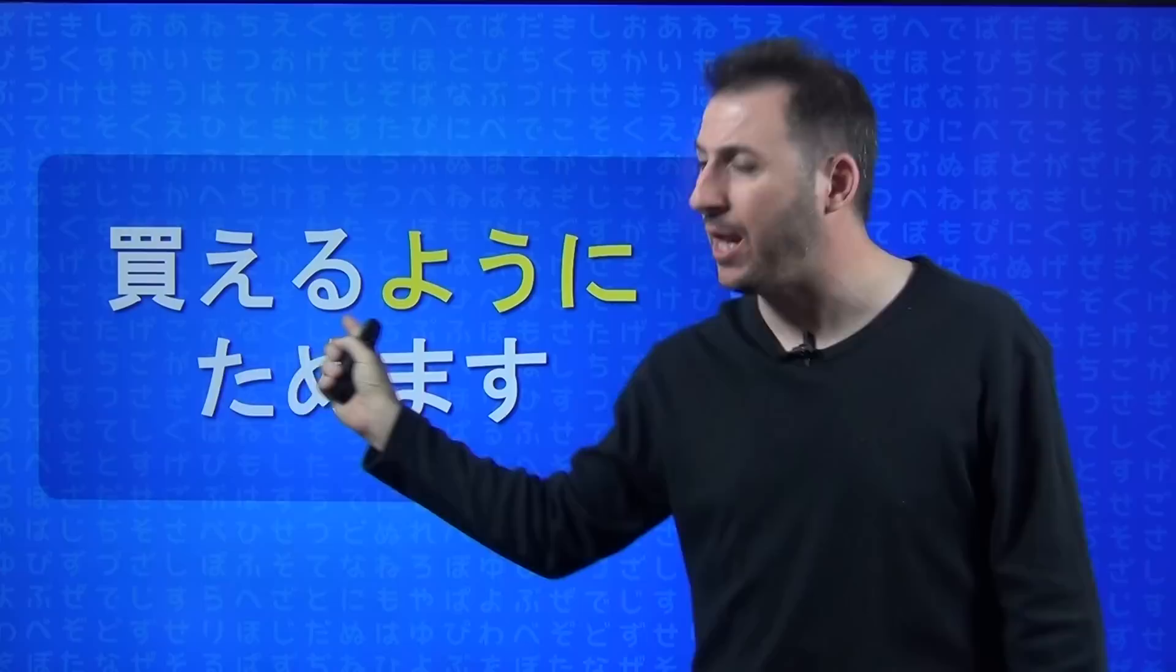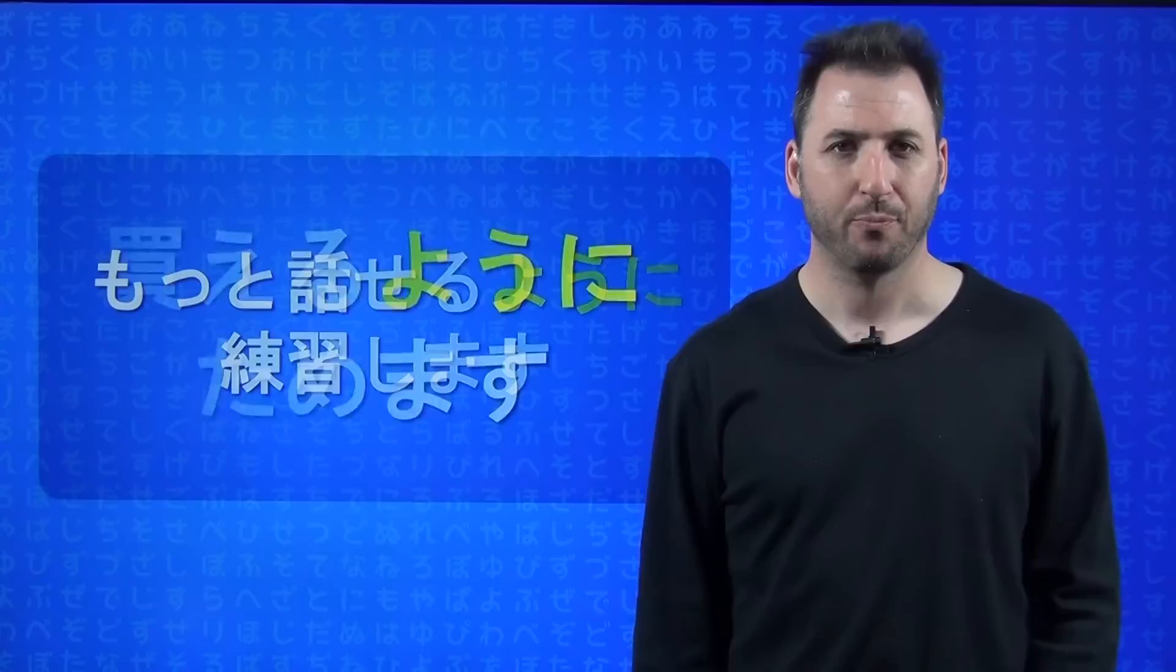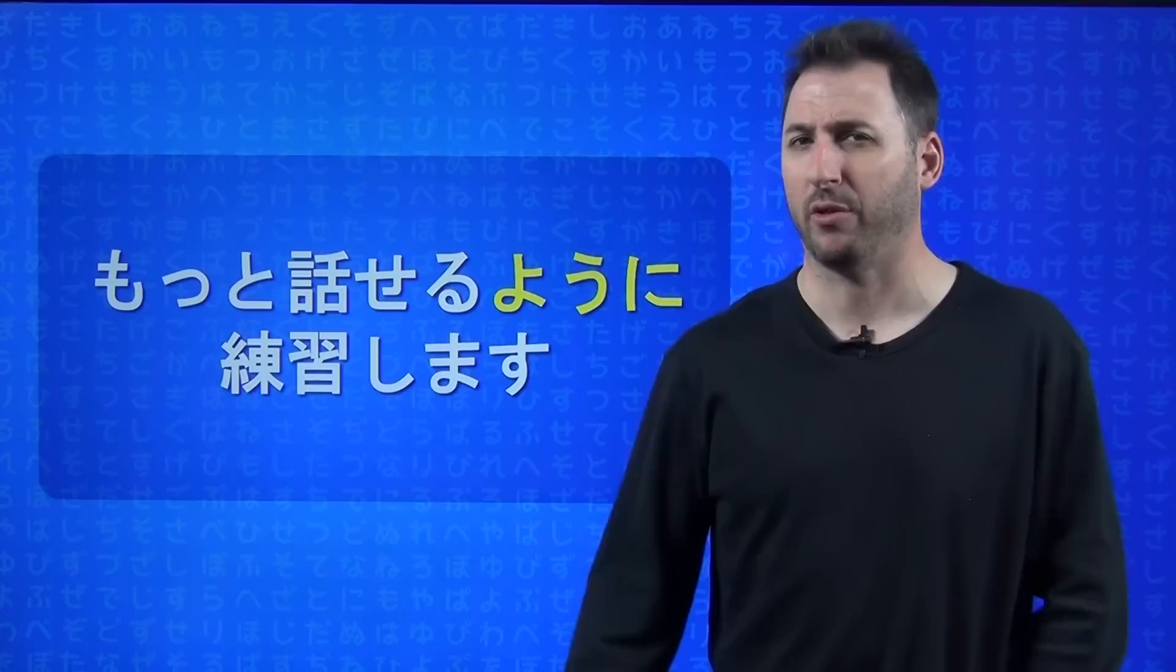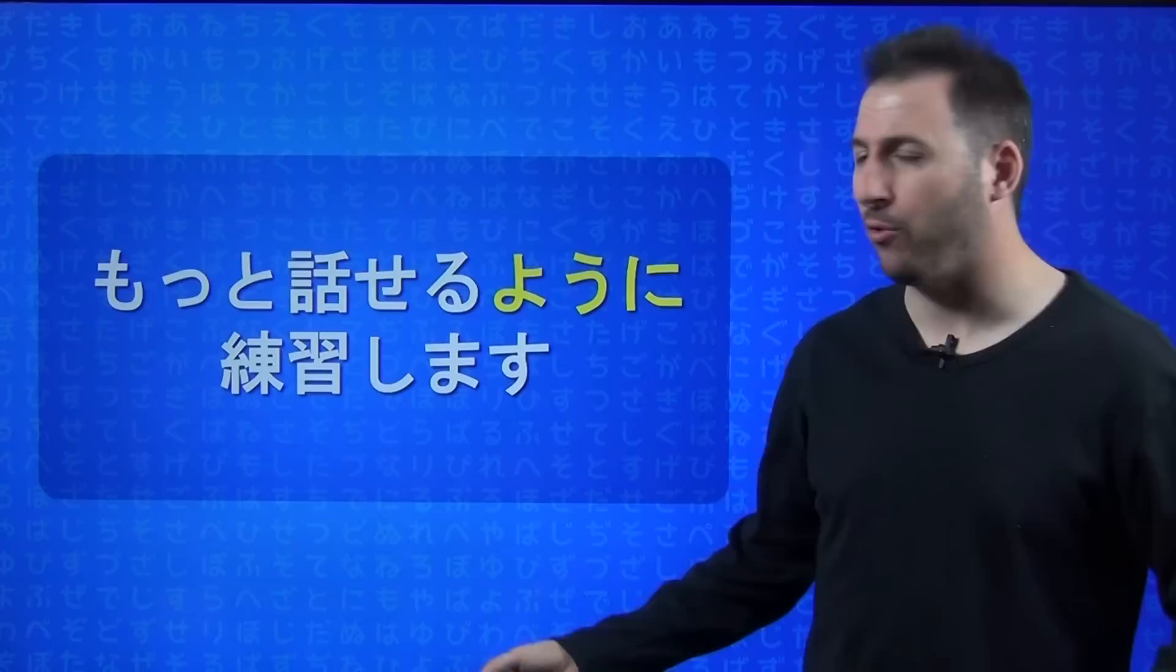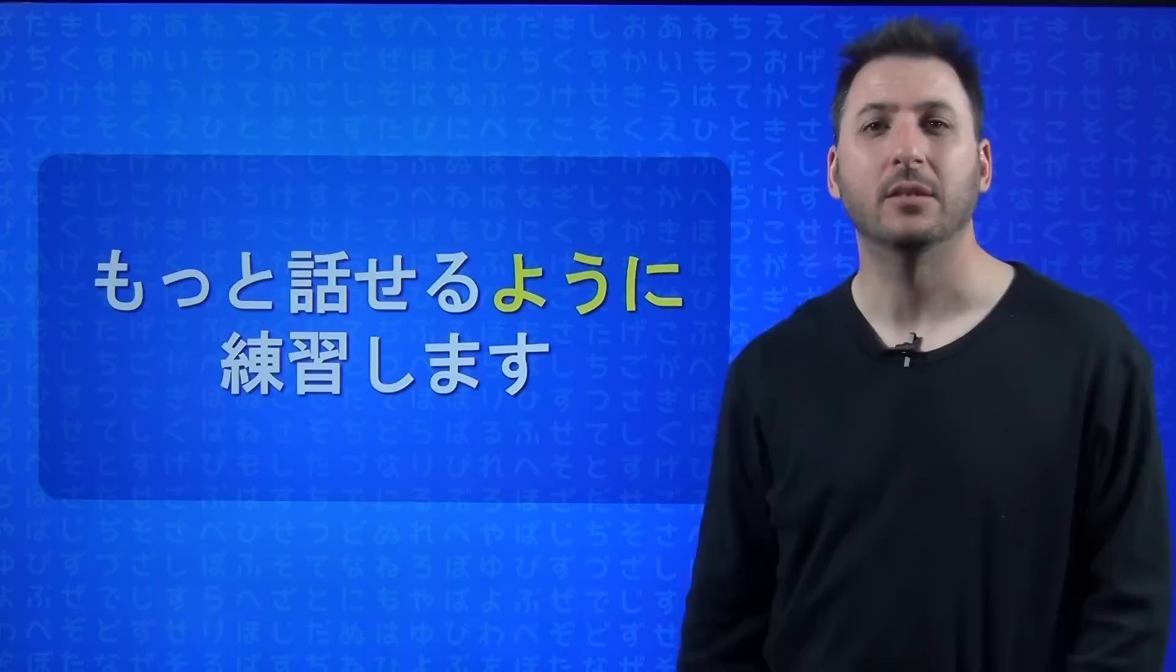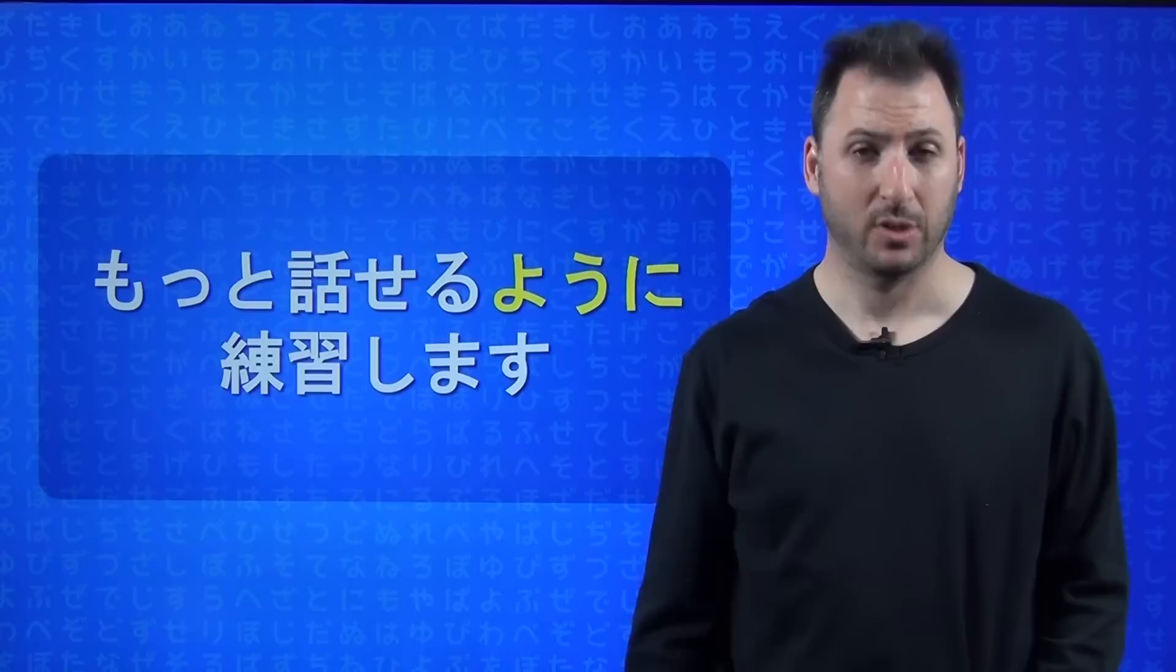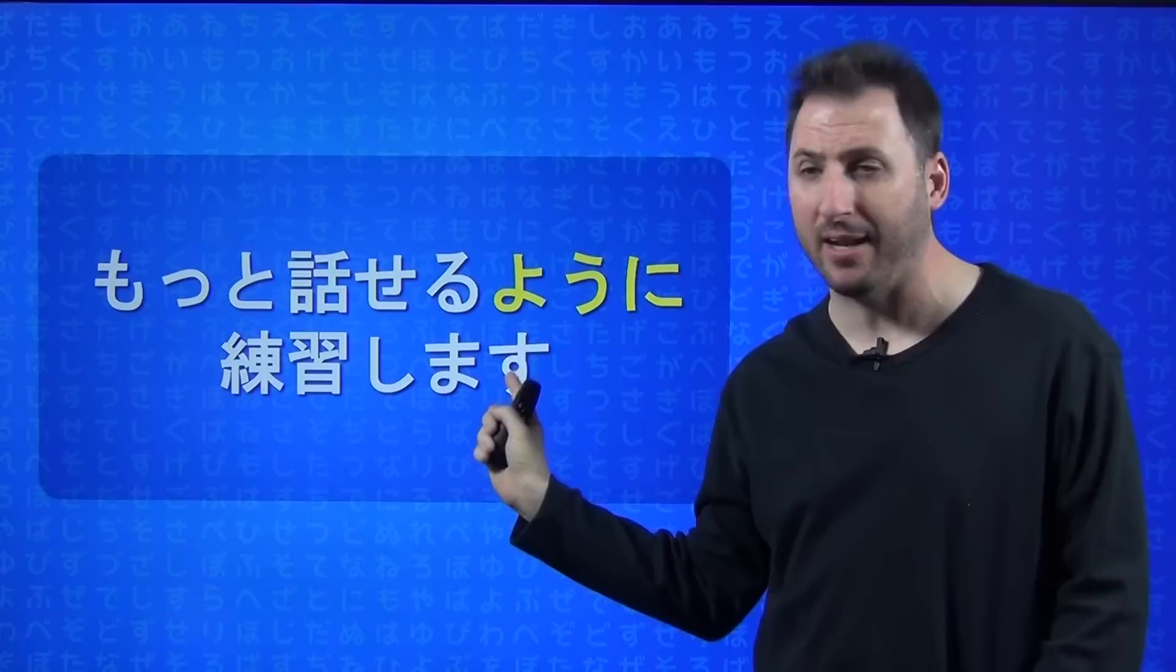Let's say you're learning Japanese and you have your first Skype phone call with a girl you met on interpals.net and you're pretty nervous and you screwed up. You could end your phone call with this: motto hanaseru yō ni renshū shimasu - I will practice so that I can speak more. You see how that works? The thing you're going to do to accomplish something is at the end. The thing you're trying to accomplish is in the beginning.